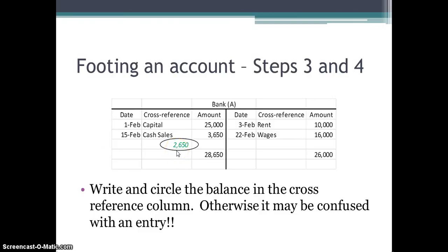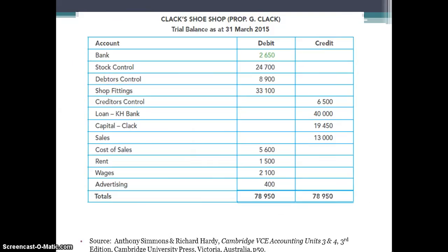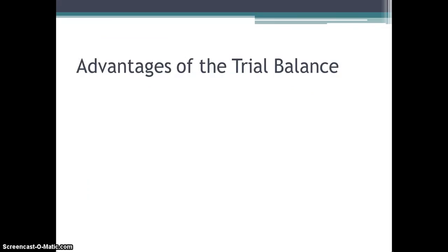A tip: make sure you write the balance in your cross-reference column so that you don't confuse it with an entry amount. We've worked out that our bank balance is $2,650, and if we look at our trial balance, bank is listed as a debit of $2,650 — which confirms this.